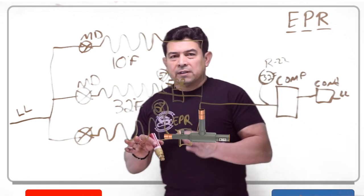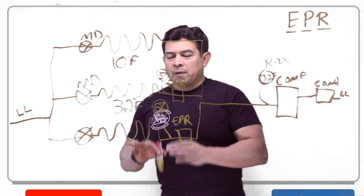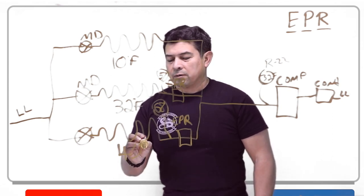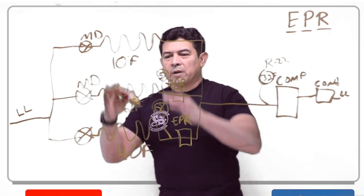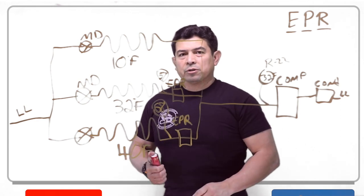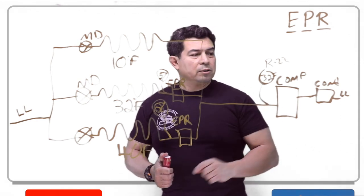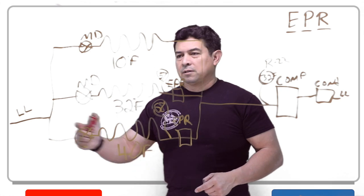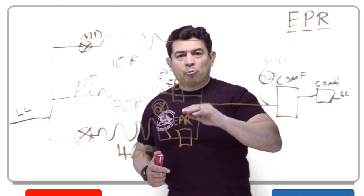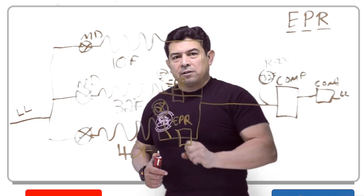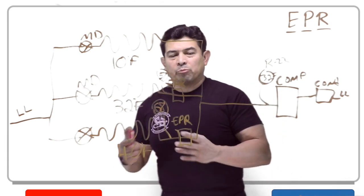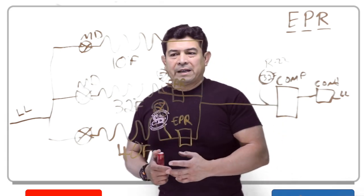Remember, we're dealing with R22 in this example. 68 PSIG cross-references to 40 degrees Fahrenheit. So now we have one, two, three boxes being maintained at different temperatures with the same compressor, the same condenser, same liquid line. We can do this by having evaporator pressure regulating valves adjusted to different pressures to give us different temperature boxes, different temperature evaporators.